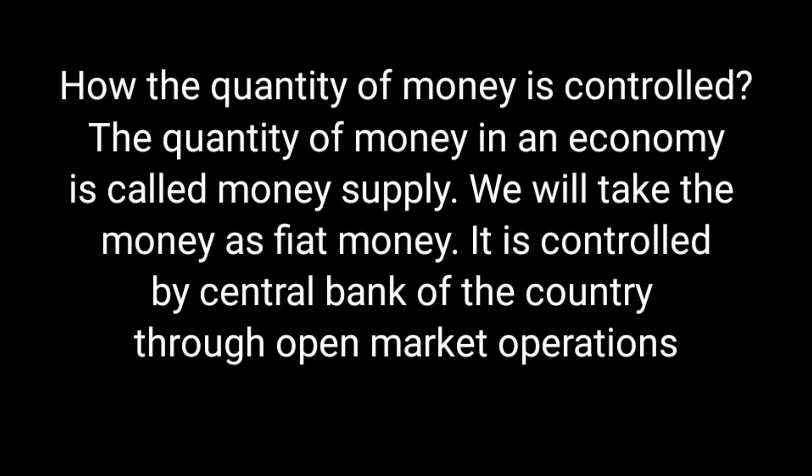Our next topic is how the quantity of money is controlled. The quantity of money in an economy is called money supply. We will take money as fiat money because that is the most prevalent one. It is controlled by a central bank of the country through open market operations. Most people assume there is only one central bank—especially Indian students think of RBI—but there can be more than one, as in the USA, popularly known as the Federal Reserve, which has 12 central banks. There are many measures to control money supply like bank rates, CRR, SLR, but the most important is open market operation. If the central bank wants to pump money into the economy, they buy bonds from the open market to increase money supply, and vice versa.